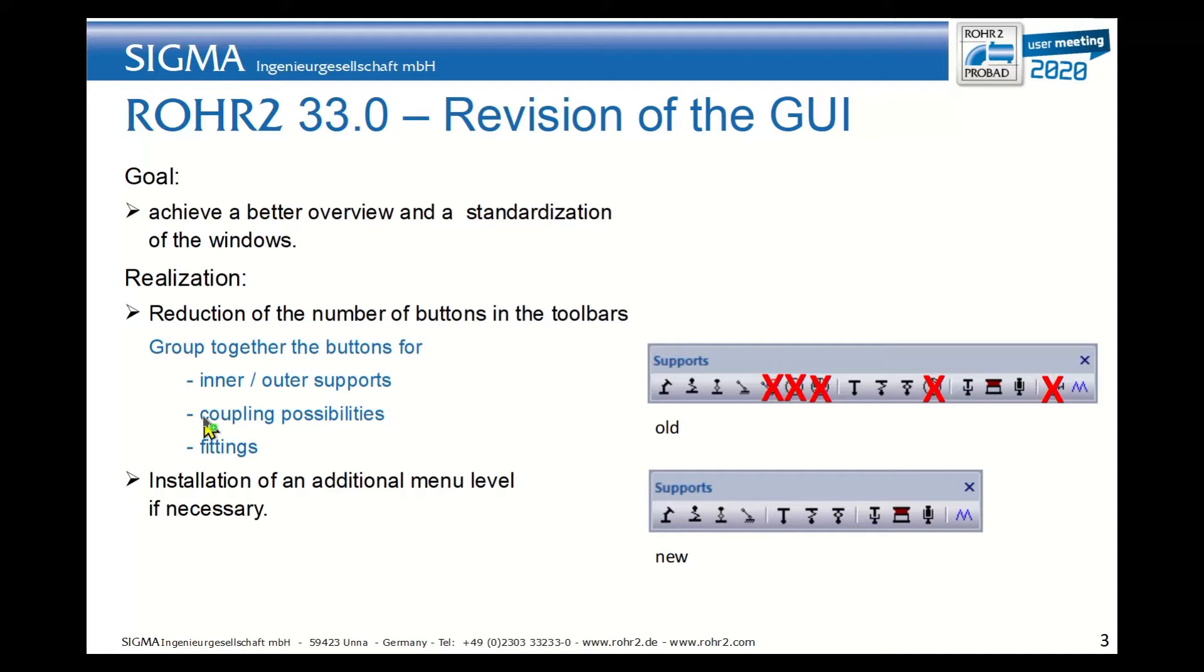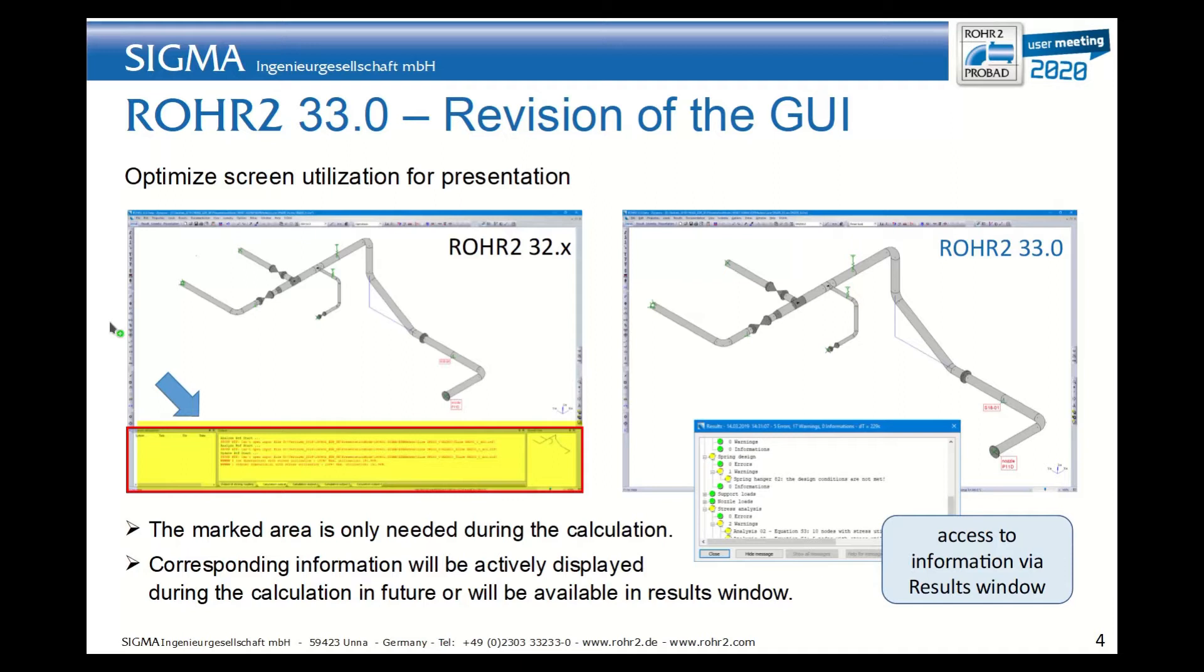If necessary, additional menus were introduced. There is also an optimization of the screen utilization for the presentation. The output window and the calculation window are only useful during the calculation itself. Therefore, they can now be hidden when there is not currently a calculation running. Anyway, the output is always available in the result window.